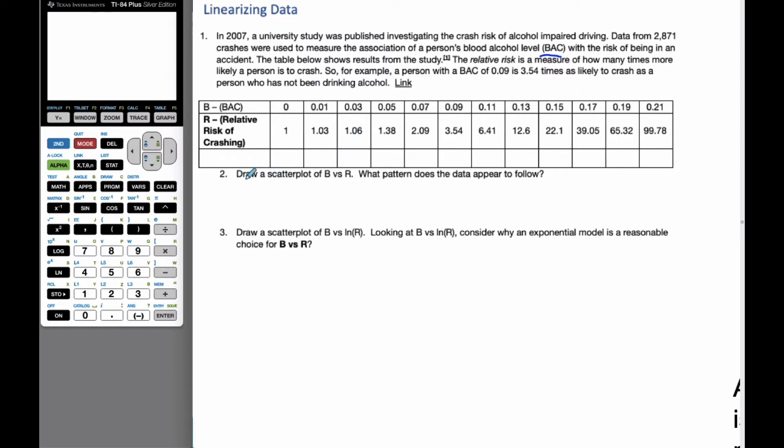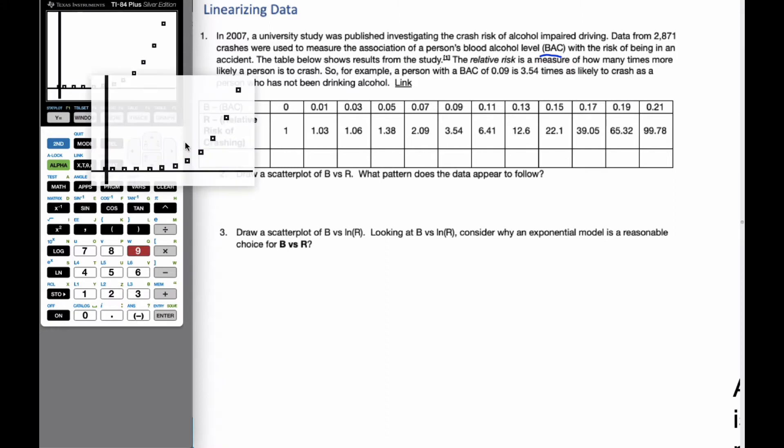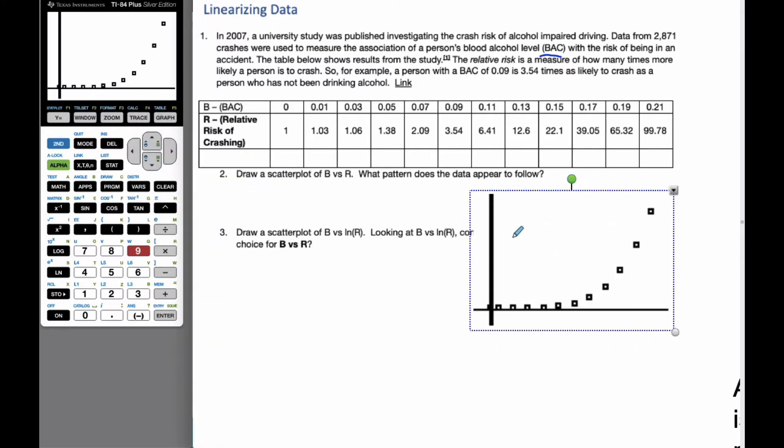So the first thing I'd ask is draw a scatterplot of B versus R. I've taken the liberty already. If I look at my data, I put L1 and L2, I put the data in here. I'm going to turn on my plot, plot 1, and I'm going to zoom to number 9. And so this is the graph that I see. And when I see this graph, this graph clearly appears to be an exponential model because it has this significant curve that is shown here.